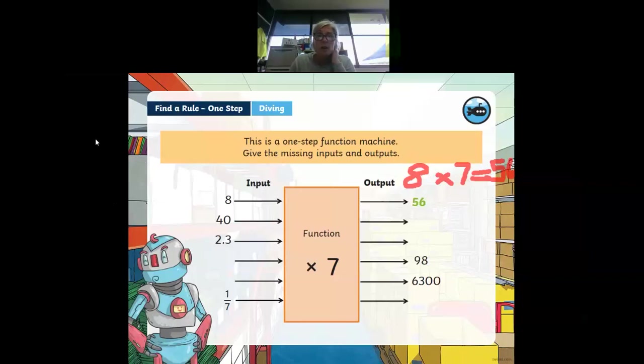So that's how we get our output number. Another word that we could use for our output number is the answer to the equation. Let's have a look at the next example and I'll let you do it on your own.